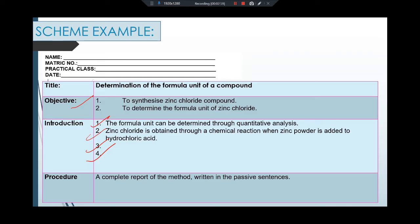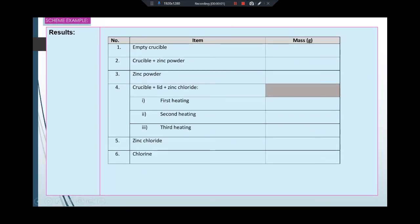For results, record your result in a table form. Always record your result in table format. So use the data given to you and record it here. And then you can find your zinc chloride and chlorine mass from calculation.